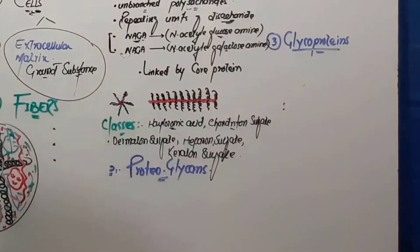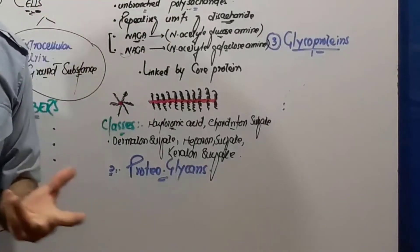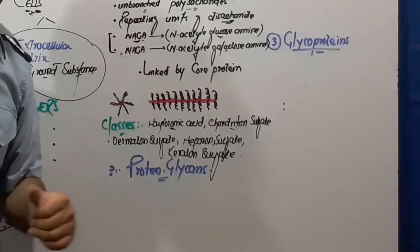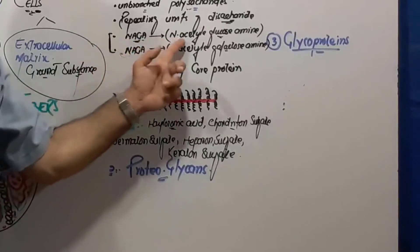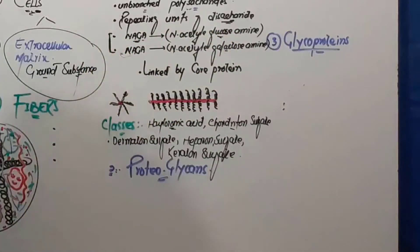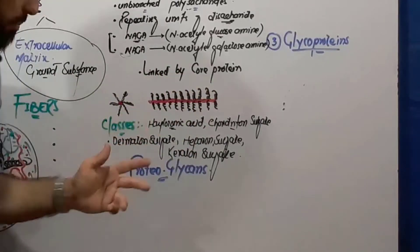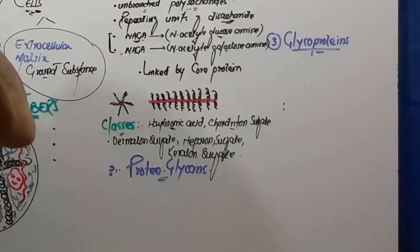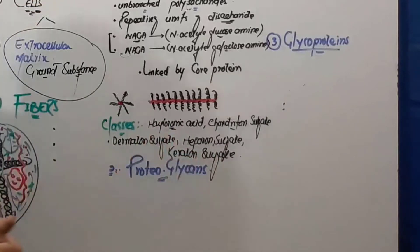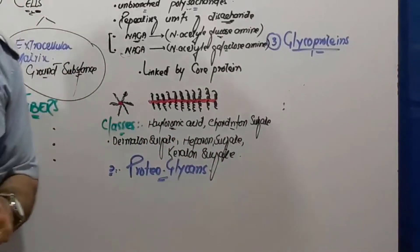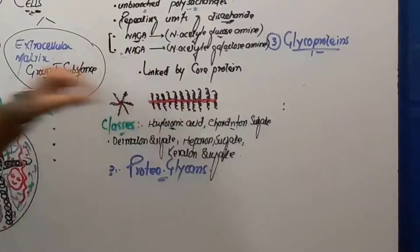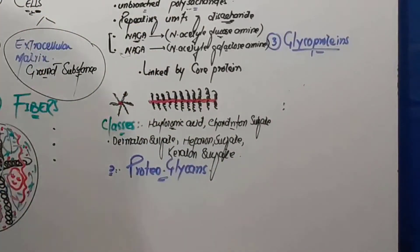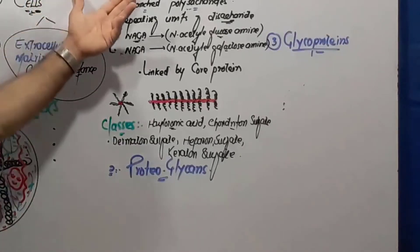If someone asks what is the participation of GAGs in connective tissue: glycosaminoglycans are unbranched polysaccharides present in the ground substance of connective tissue. They are made up of repeating units of disaccharides — N-acetylglucosamine and N-acetylgalactosamine. They are linked by a core protein. The classes of GAGs are hyaluronic acid, chondroitin sulfate, dermatan sulfate, heparan sulfate, and keratan sulfate.